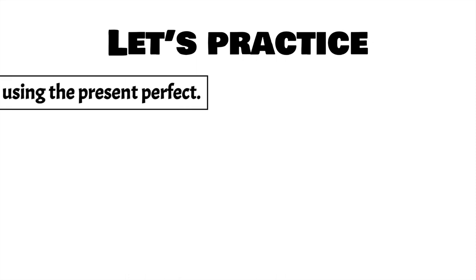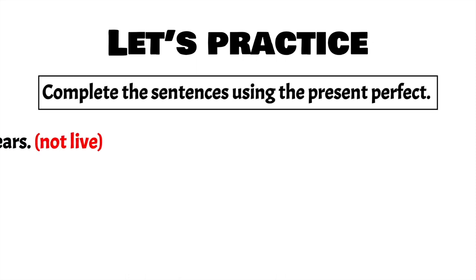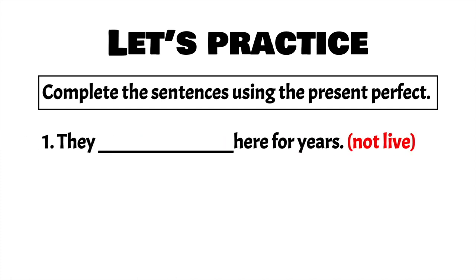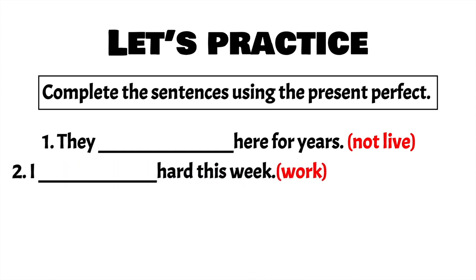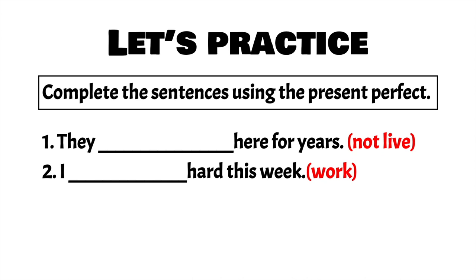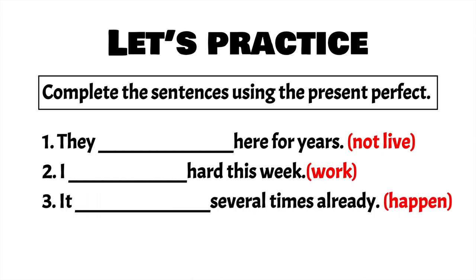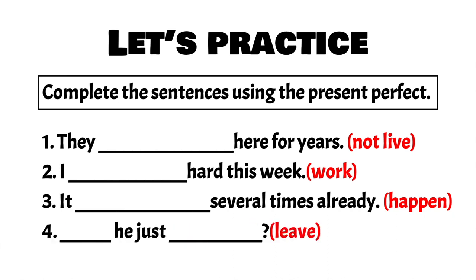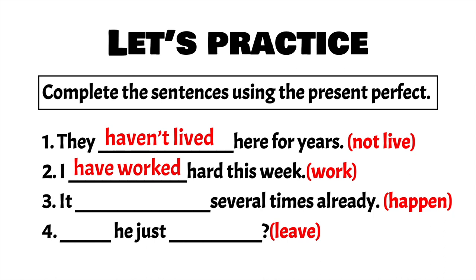Now we're going to do some practice. Complete the sentences using the present perfect simple. Number 1: They / here / for years / not live — so this is a negative sentence. Number 2: I / hard / this week / work. Number 3: It / several times / already / happen. Number 4 is a question. I give you 5 minutes to complete the exercise. Pause the video, and then I will give you the key. Now that you have finished, I will give you the key. Number 1: They haven't lived here for years. Number 2: I have worked hard this week. Number 3: It has happened several times already. Number 4: Has he just left?